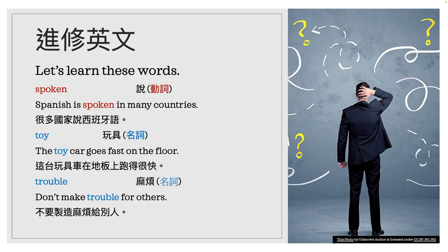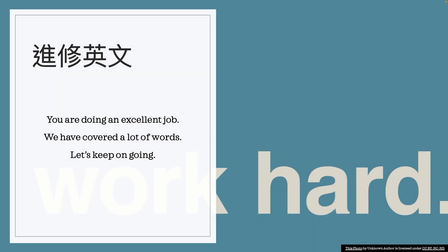Spoken，说，动词。Spanish is spoken in many countries. 很多国家说西班牙语。Toy，玩具，名词。The toy car goes fast on the floor. 这台玩具车在地板上跑得很快。Trouble，麻烦，名词。Don't make trouble for others. 不要制造麻烦给别人。